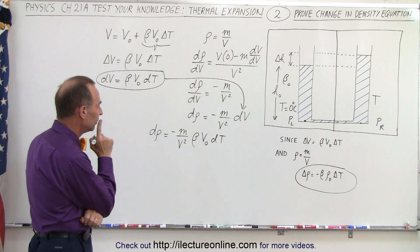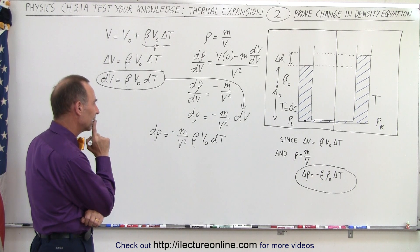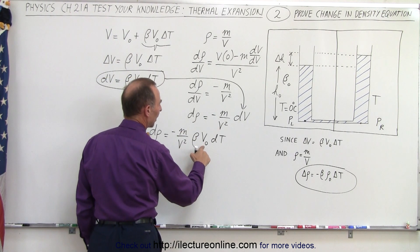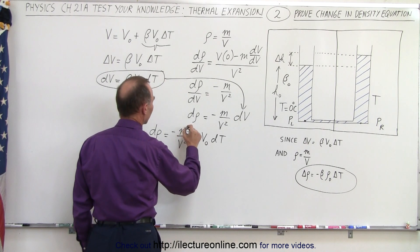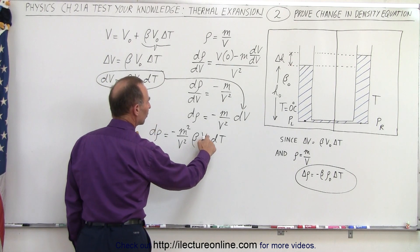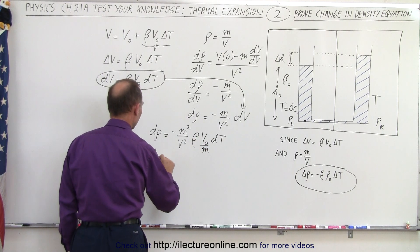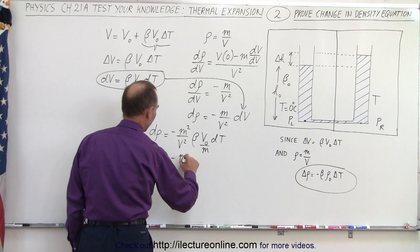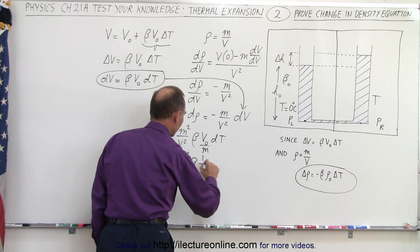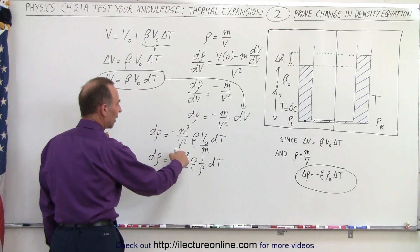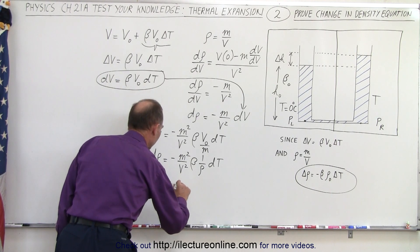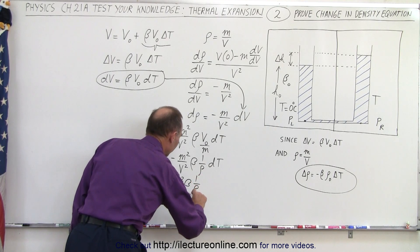Now, notice that if we multiply and divide by mass — making this mass squared and dividing by mass to get V over m — then this term becomes the inverse original density. So the change in density equals minus m squared over V squared times beta times 1 over density times dT. And m squared over V squared is density squared, so the change in density equals minus density squared times beta times 1 over density times dT.